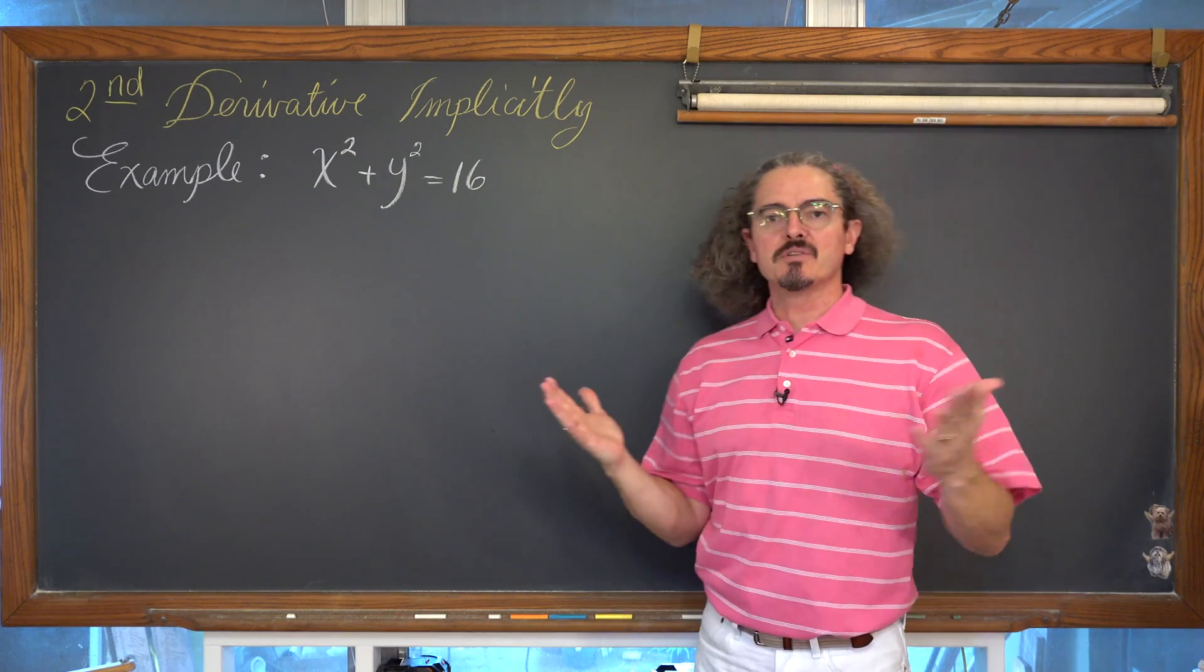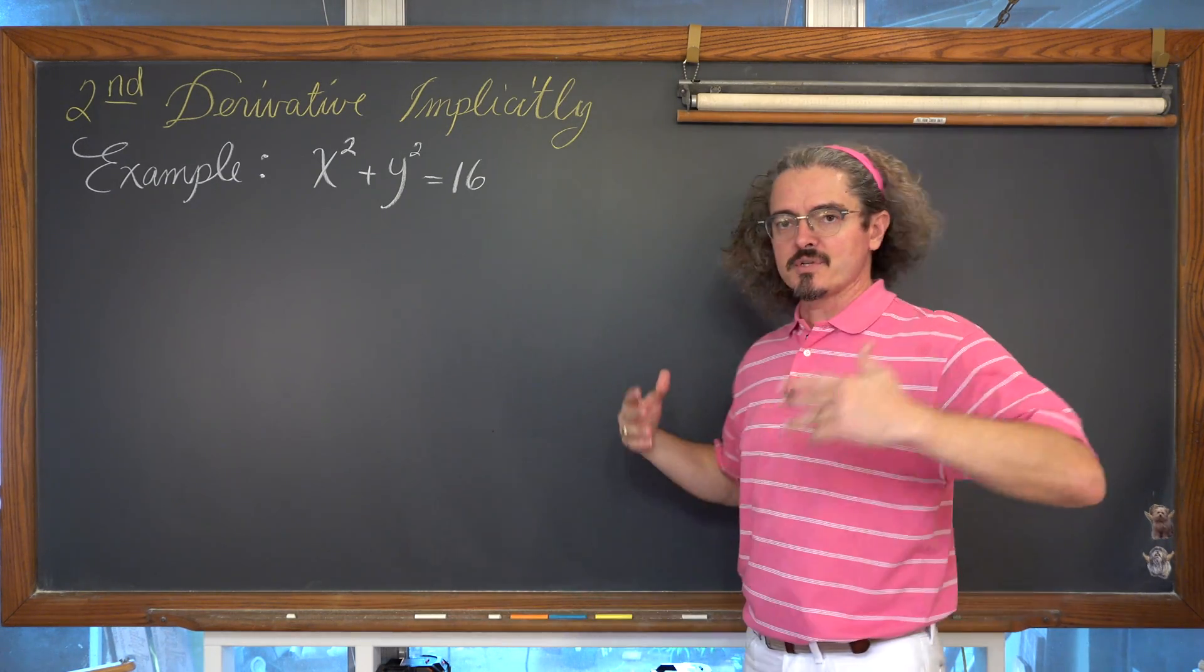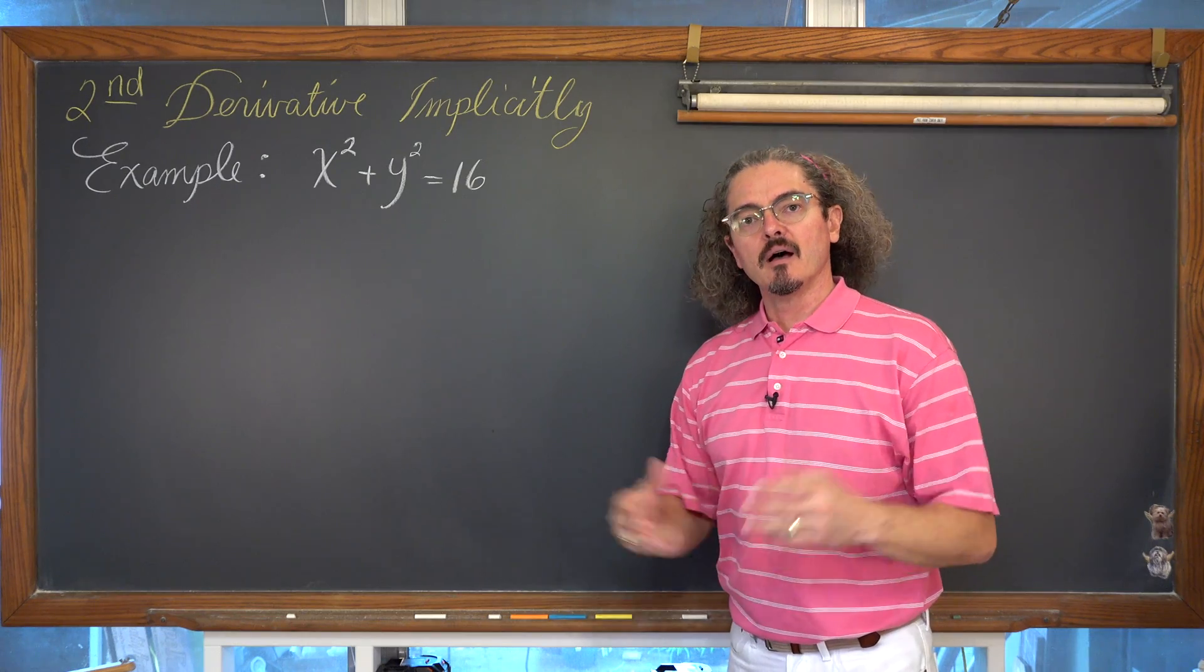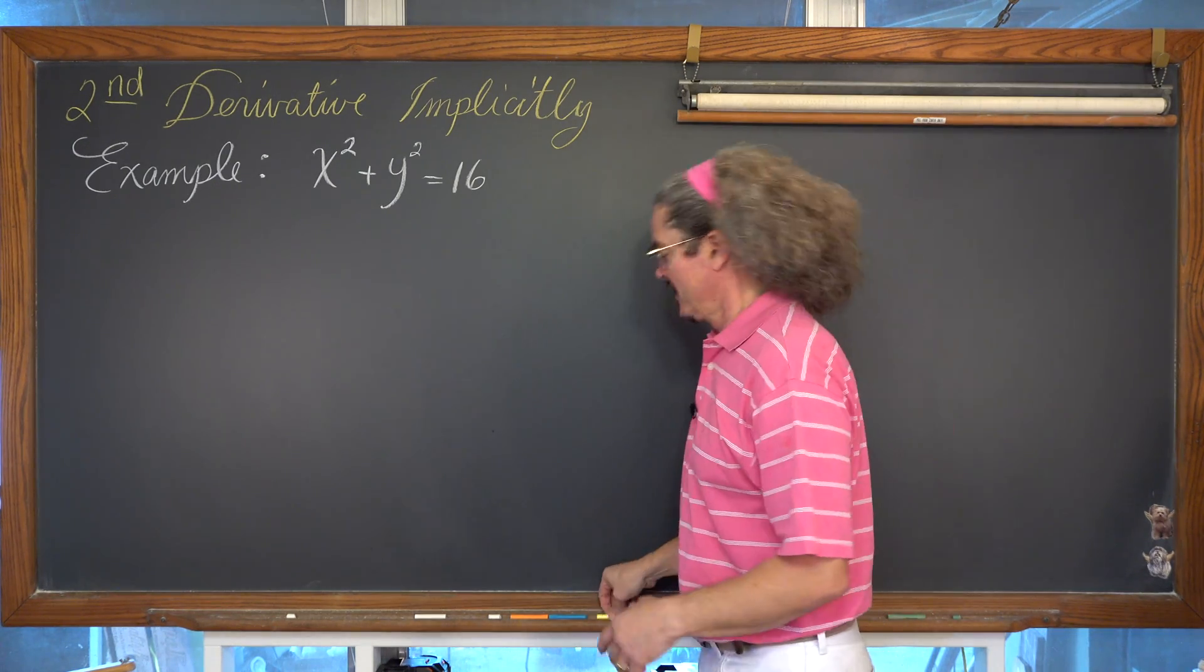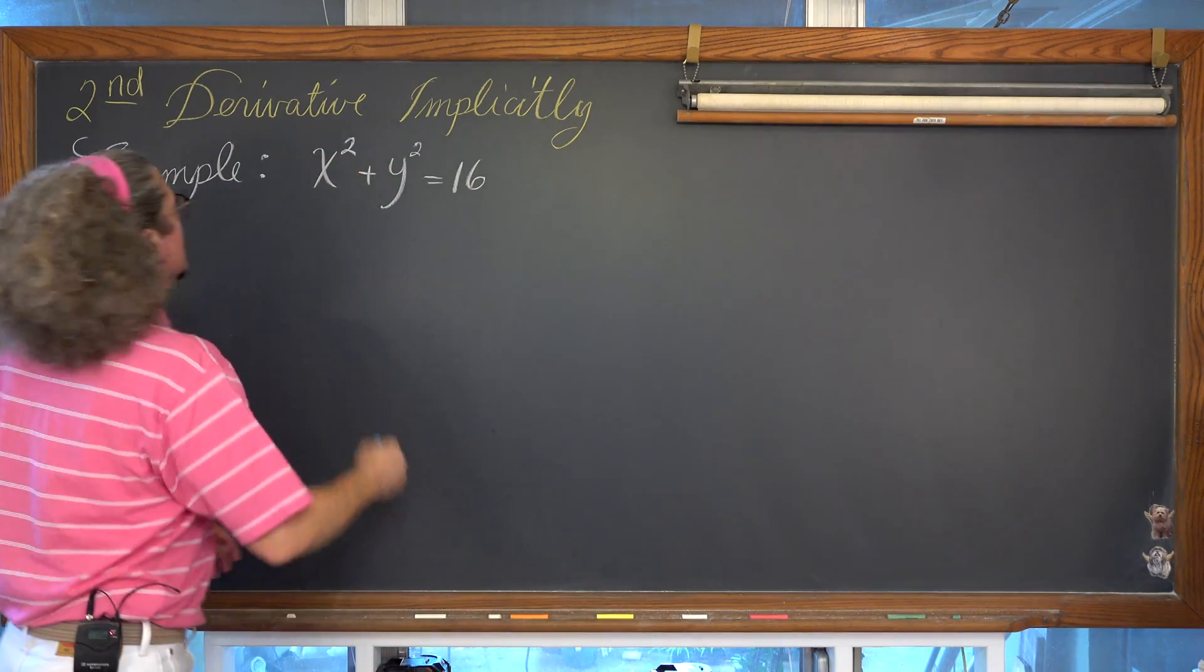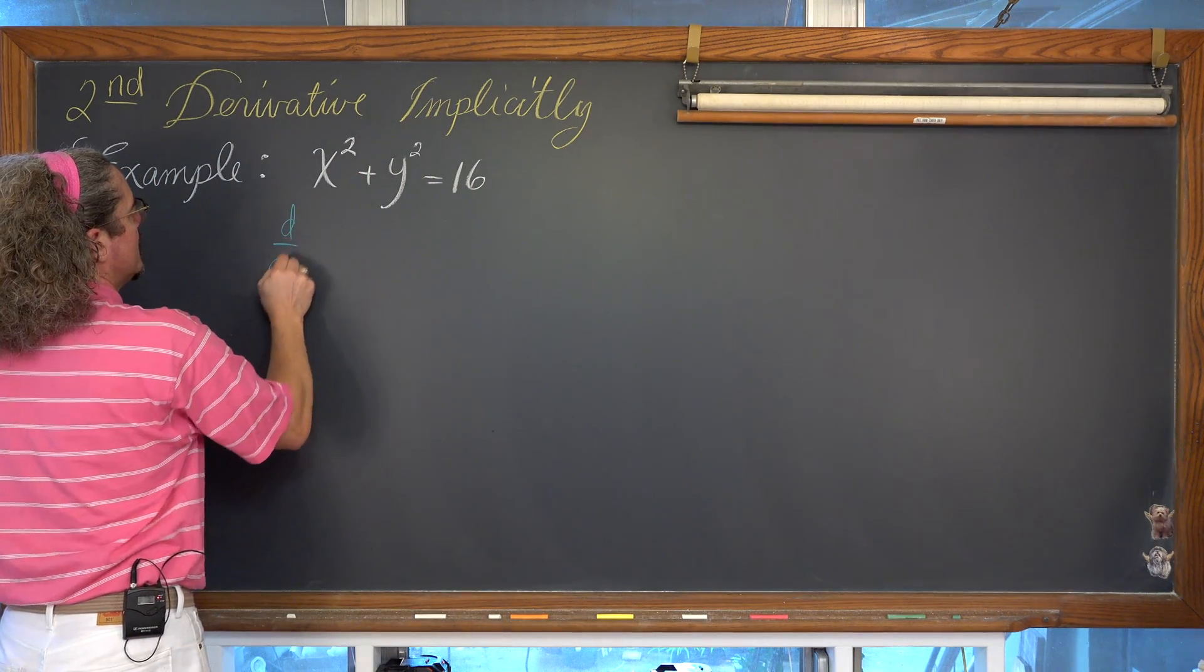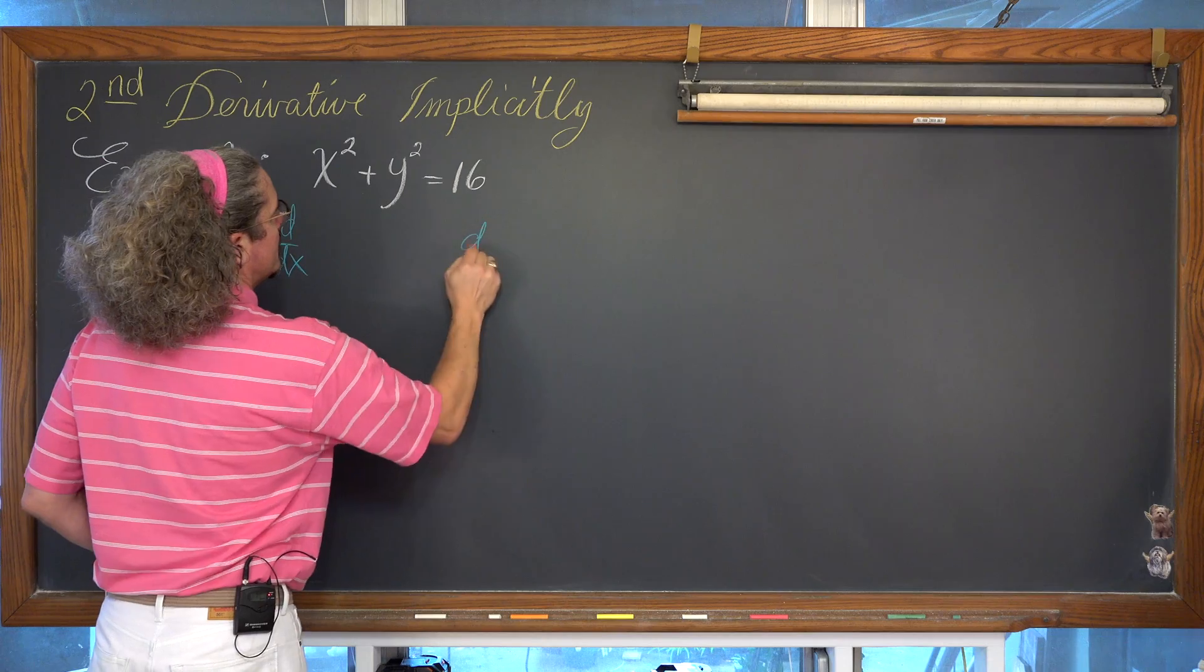Okay, how are we going to do that? Well, we're just going to take the derivative of both sides of the equation with respect to x like we've been doing for this entire section. So we're going to take the derivative of the left-hand side and the right-hand side.